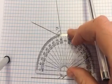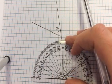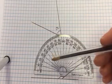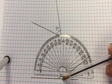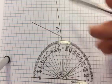So what you do is you line up the 180 degrees and zero line with the line you're measuring from. Put that kind of cross bit right on the point where you want to measure, and you read from zero.